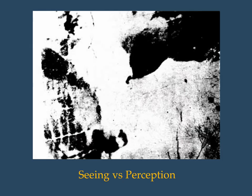To show you how this works, I want you to look at this image. This image demonstrates a difference between seeing — the physical taking in of visual information, dots of light, photons — and perception, the making of meaning of it. I'd like you to stop this video and try to figure out what you're looking at, and then when you've got some ideas, turn it back on.